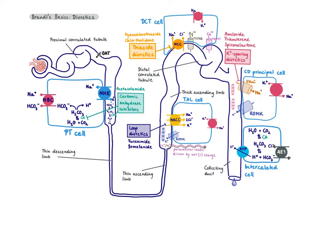Which diuretics are going to have this adverse effect? All of them that work proximal to the collecting duct — thiazides, loop diuretics, and carbonic anhydrase inhibitors. They will all result in hypokalemia. The potassium-sparing diuretics, on the other hand, block ENaC directly or indirectly, so there is no negative charge generated and no potassium is lost. That's actually where the name comes from — they are potassium-sparing because they hold on to potassium, in contrast to all the other diuretics which waste potassium.